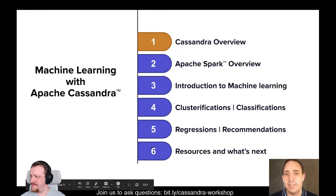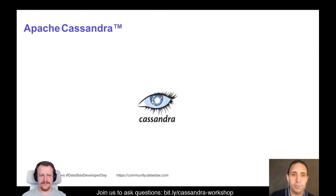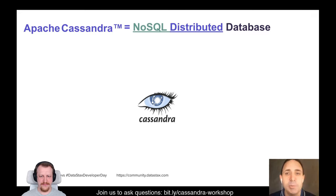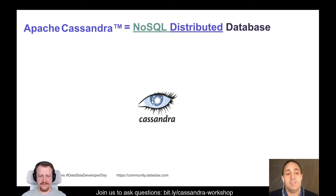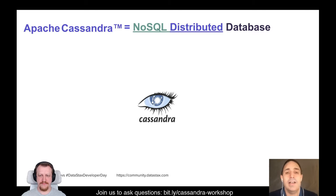Let's go with a Cassandra overview. Apache Cassandra is a distributed NoSQL database — every single word is very important. NoSQL means it's not working the same way as you may be used to with a relational database like Oracle, MySQL, or PostgreSQL. It's not the same.